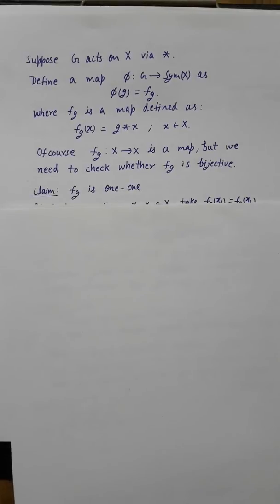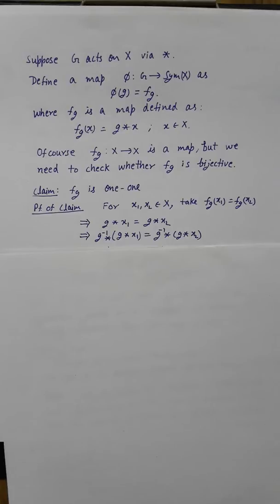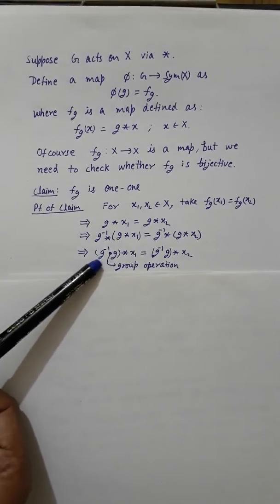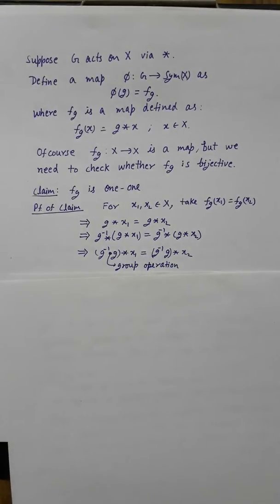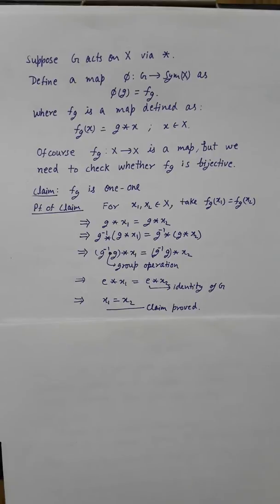To check fg is one-to-one: take x1, x2 in X and suppose fg(x1) = fg(x2). Then g ★ x1 = g ★ x2. Operate g-inverse on both sides; by the property of the action this gives g-inverse ★ (g ★ x1) = g-inverse ★ (g ★ x2), which simplifies to e ★ x1 = e ★ x2, so x1 = x2. This shows fg is injective.